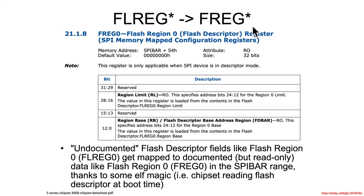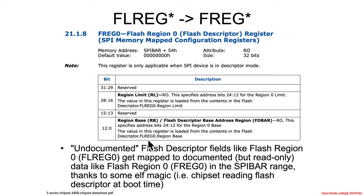The FL reg and F reg are two things we see references to. Specifically, the F reg is the memory-mapped copy of this data — documented in the data sheets somewhere in the spybar region — and it contains things like the region base and the region limit. These values are pulled from the flash descriptor on the flash chip. They are read-only, and as the documentation states, the value in this register is loaded from the contents in the flash descriptor FL reg 0 region base field. So the hardware pulls values out and maps them into memory, and if you need to inspect them, they are exposed there.